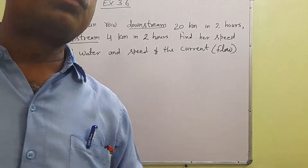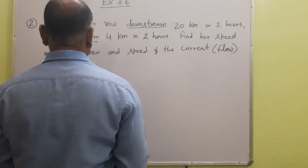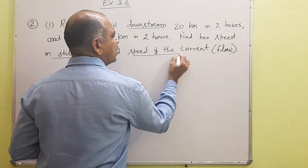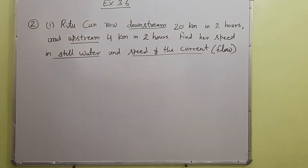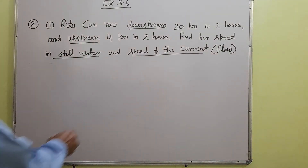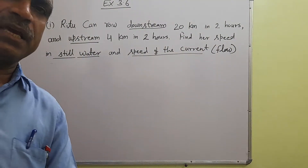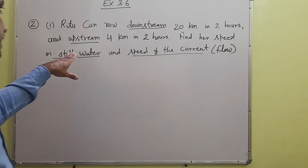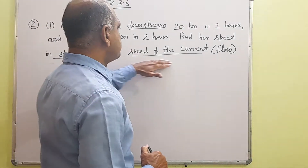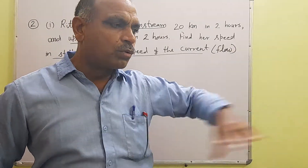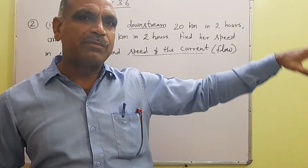Current का मतलब है जो river का flow है, उसकी speed आपको निकालनी है। आपसे दो unknown quantities पूछी जा रही हैं — speed of the boat in still water, यानी रुके हुए पानी में अगर boat चले तो speed क्या होगी, और speed of the current, जो पानी river में flow कर रहा है उस flow की speed भी निकालनी है।